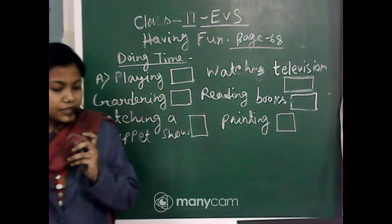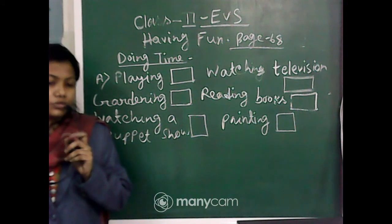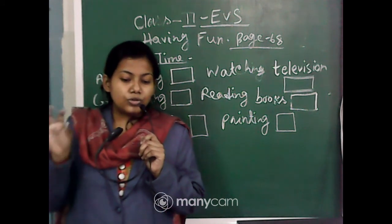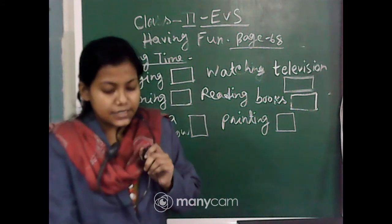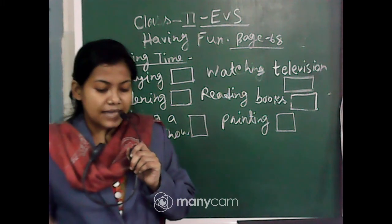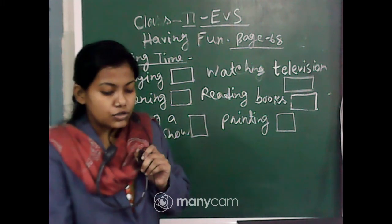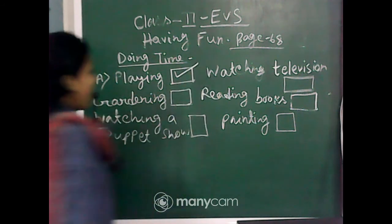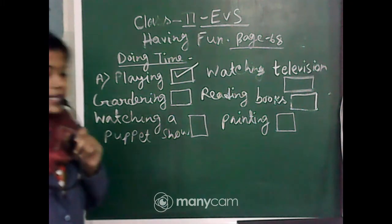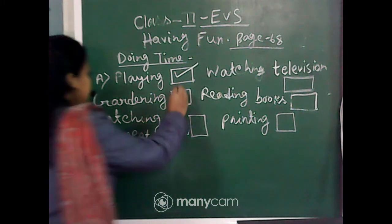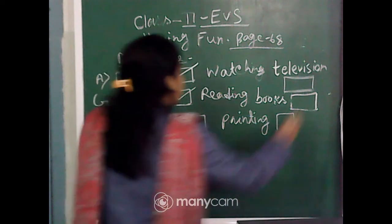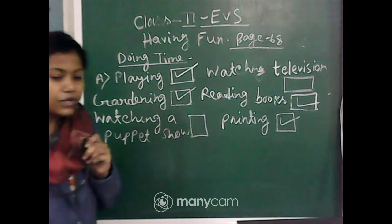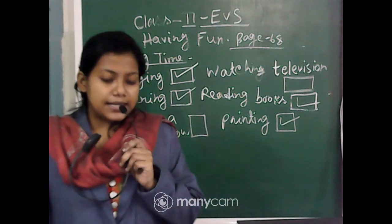Tick the activities that you do to have fun and cross the ones that you don't. Now, tick the correct option: playing — yes, tick; watching television — tick or cross, your choice; gardening — yes; reading books — yes; painting — yes. In your choice, tick the activities that you do to have fun and cross the ones that you don't.